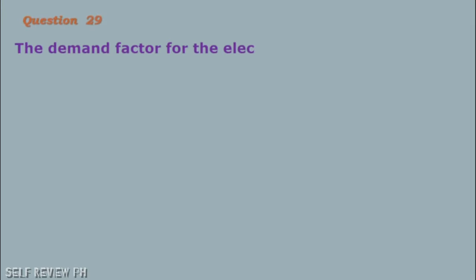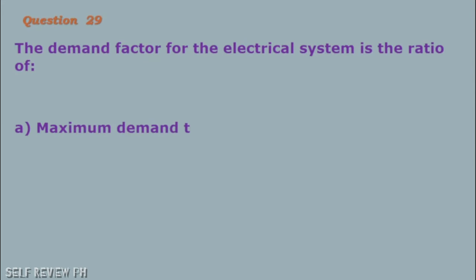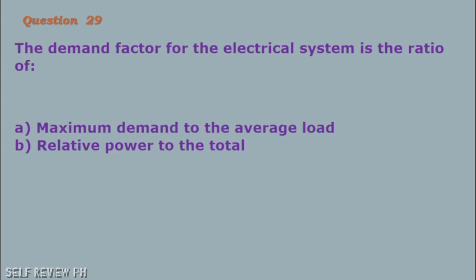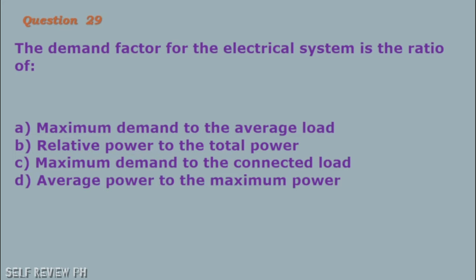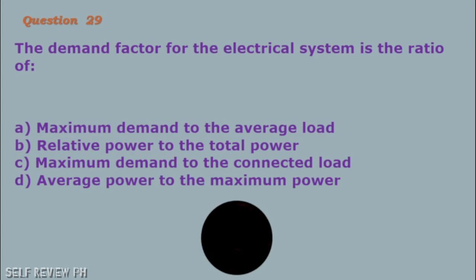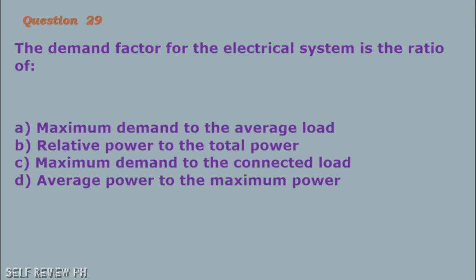Question number 29: The demand factor for the electrical system is the ratio of: A. Maximum demand to the average load B. Relative power to the total power C. Maximum demand to the connected load D. Average power to the maximum power. The correct answer is letter C, maximum demand to the connected load.